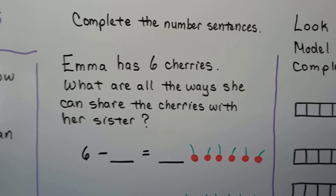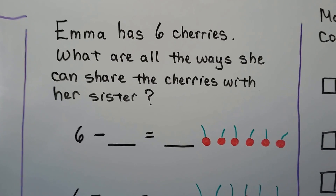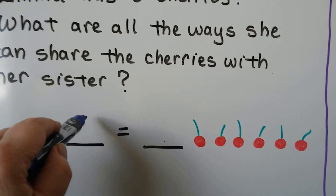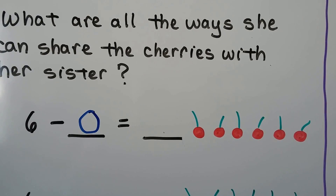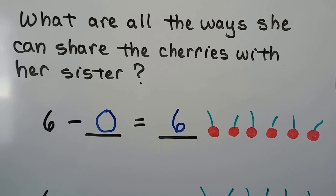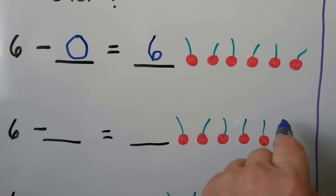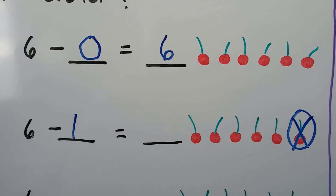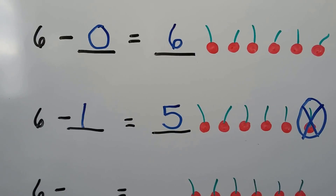We can complete the number sentences. Emma has six cherries. What are all the ways she can share the cherries with her sister? We can take zero away and Emma will keep all the cherries to herself — she'll still have six. That's not sharing though, is it? We can take one cherry away. Six minus one, and then Emma will have five cherries and her sister will have one.